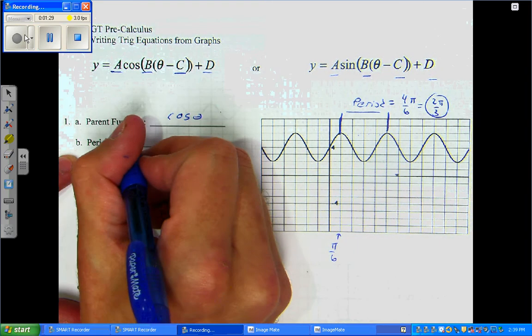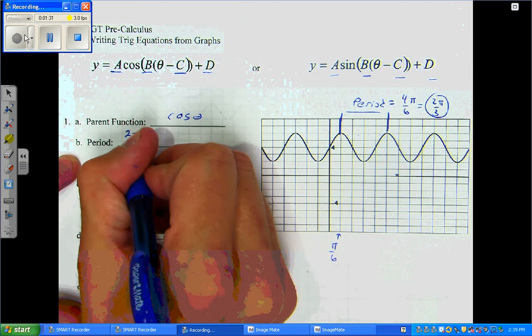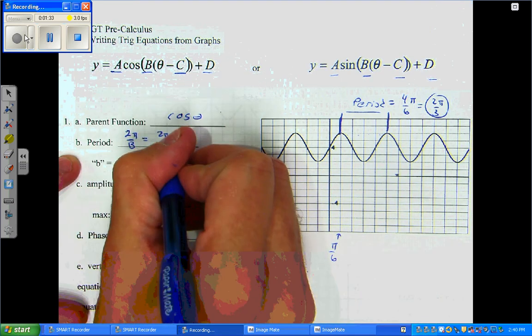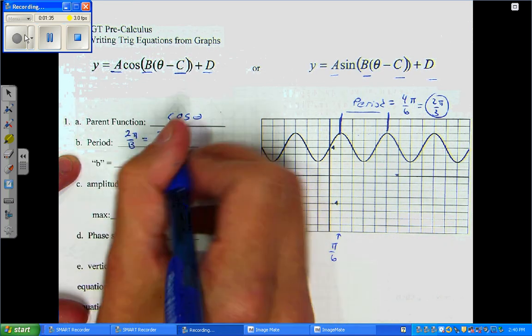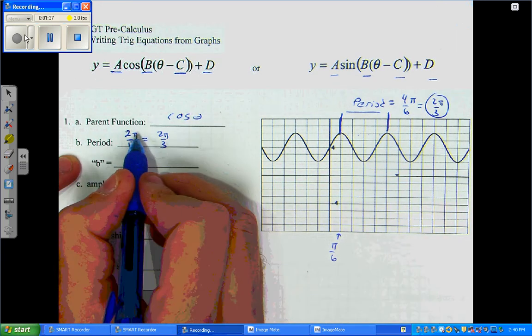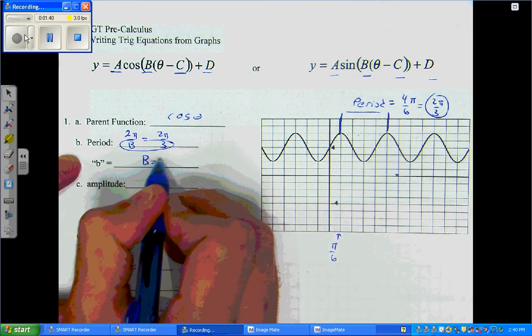So, to get the period, we just use our rule: 2 pi over B equals 2 pi over 3. We recognize that the tops are the same and the bottoms have to be the same. So, we already have B is 3.